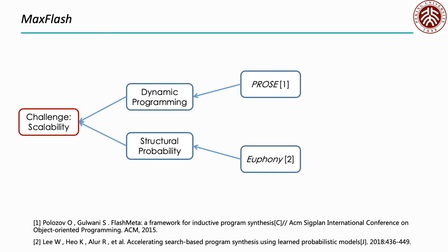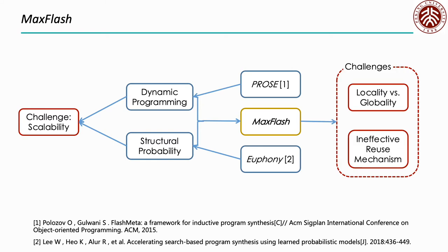In this paper, we propose a novel framework named MaxFlash. MaxFlash combines dynamic programming and structural probability for further speeding up programming by example. However, there is no free lunch in the world. To enjoy the efficiency of these two approaches at the same time, we have to overcome two challenges first.